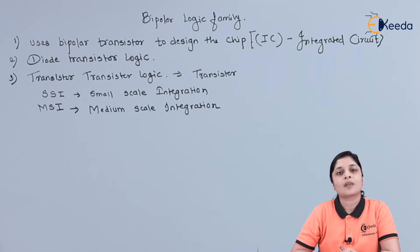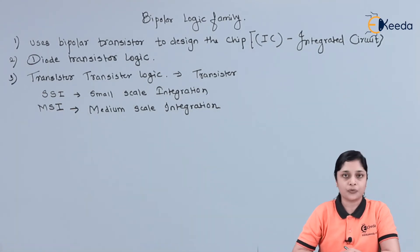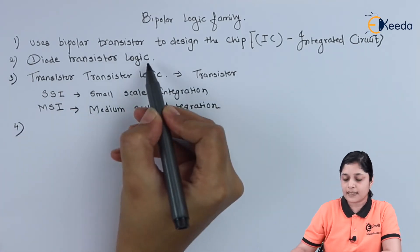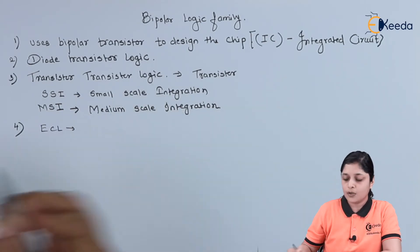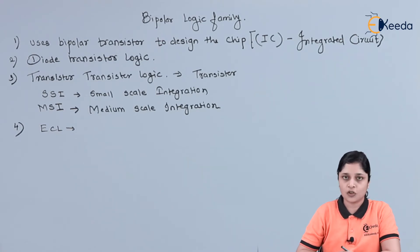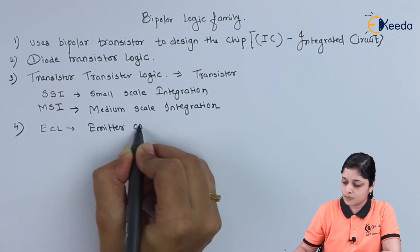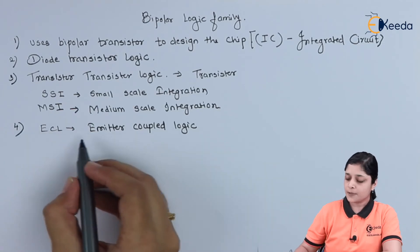are operated under saturated or cut-off region. And we have discussed DTL, TTL, and we have ECL also. Long form of ECL is Emitter Coupled Logic. It is the fastest technology used to design the ICs. Speed of ECL is more as compared to all other technologies. ECL technology is used for high speed applications.